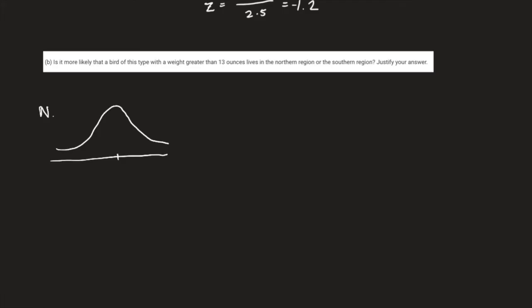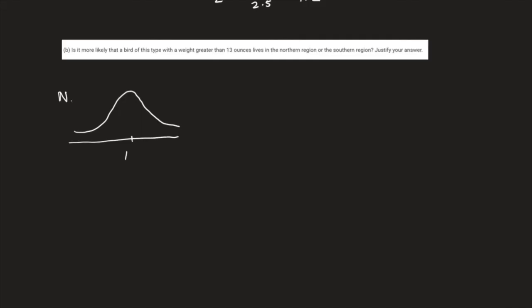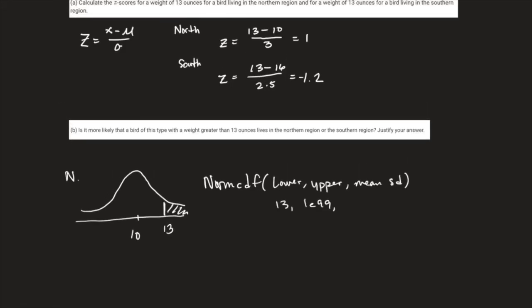If you showed your work and got the correct z-scores, essentially correct, that's part A. This one's a little bit more involved. It wanted to know, is it more likely that a bird of this type with a weight of greater than 13 ounces lives in the northern region or the southern region? Justify your answer. Keyword there is it more likely, so I need a probability. What's the probability that it came from the north or from the south? This is where normalcdf comes into play: normalcdf with the lower, upper, mean, and standard deviation. Notice I defined it here.